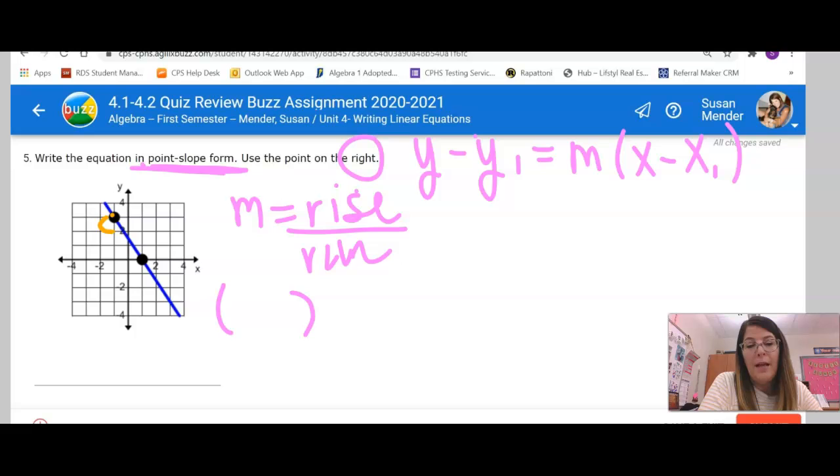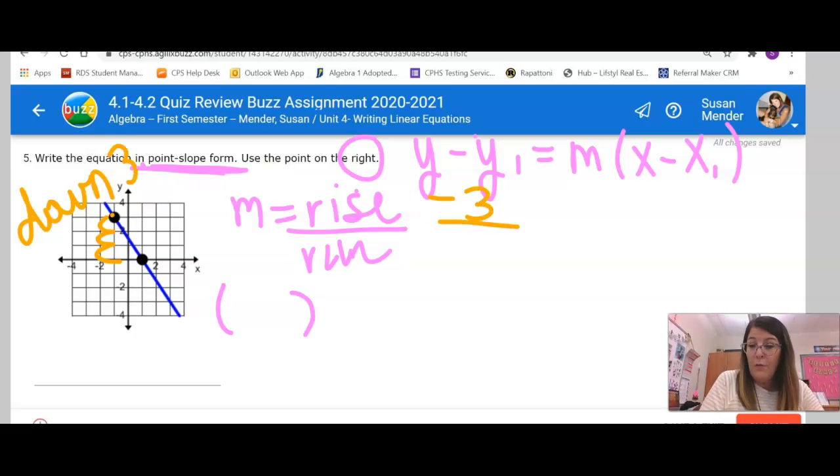So I'm going to count this. I make a box. One, two, three. So I am going down three. So down three is negative. When you're going up, it's positive. Down is negative. Right is positive. Left is negative.